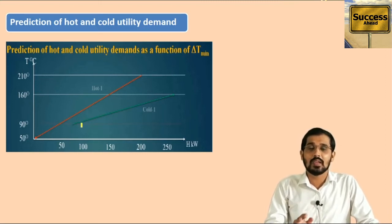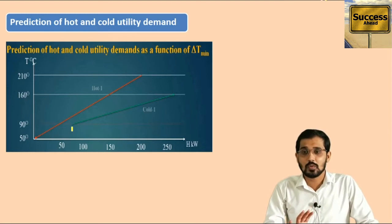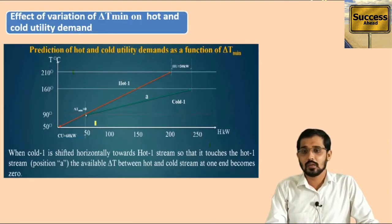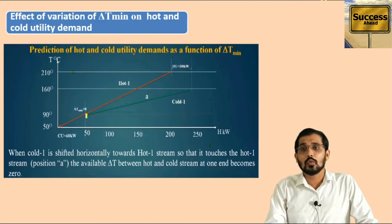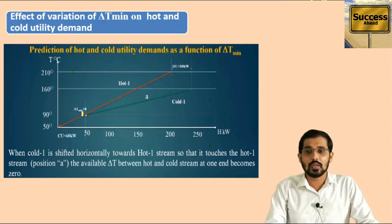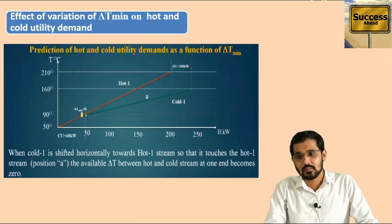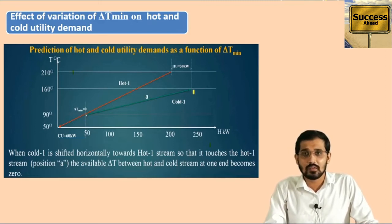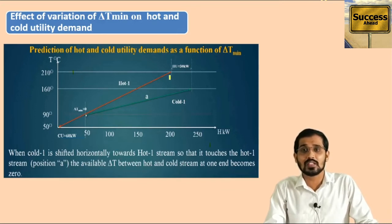If delta T minimum increases, the heat transfer rate also increases. When the cold stream is shifted horizontally towards the hot stream, it touches the hot stream at position A where delta T minimum equals zero — that is the pinch point. The difference between the hot stream interval and the cold stream interval can be seen in the diagram. The cold stream covers one interval and the hot stream covers another, and there is an extra part of the hot stream beyond the cold stream's interval.